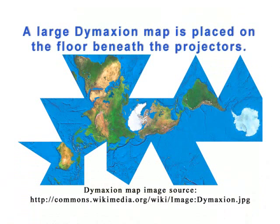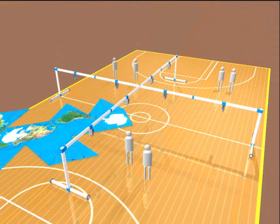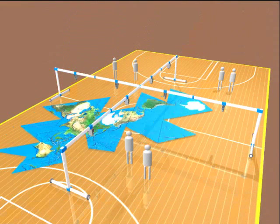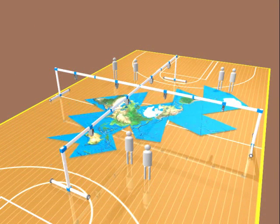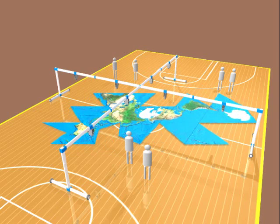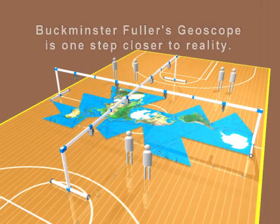A large DIMAXIUM map is placed on the floor beneath the projectors. Buckminster Fuller's geoscope is one step closer to reality.